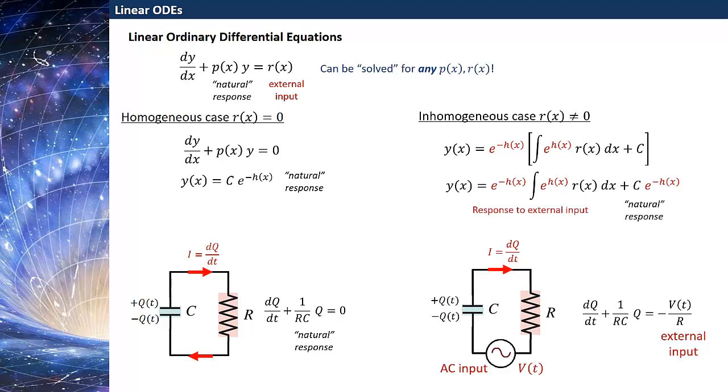In that language, the first term in our general solution is the response to the external input. It's responding to the input r(x) in this particular way. Notice we have added to that the natural response of the system to the initial conditions, so that natural response is already cooked into our solution. We take a sum of the natural response and the response to some external input. I hope that gives you some intuition about what this general solution is trying to tell you.